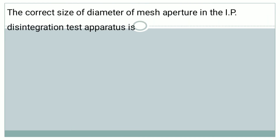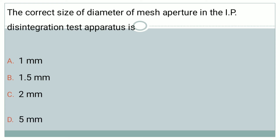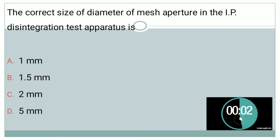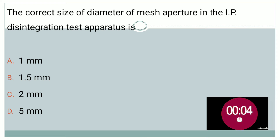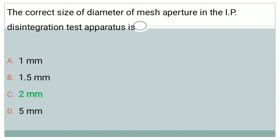Next question: the correct size of diameter of mesh aperture in IP disintegrating test apparatus is — option A: 1 mm, option B: 1.5 mm, option C: 2 mm, and option D: 5 mm. The correct answer is 2 mm. As per IP, aperture size is 2 mm for the disintegration test apparatus.